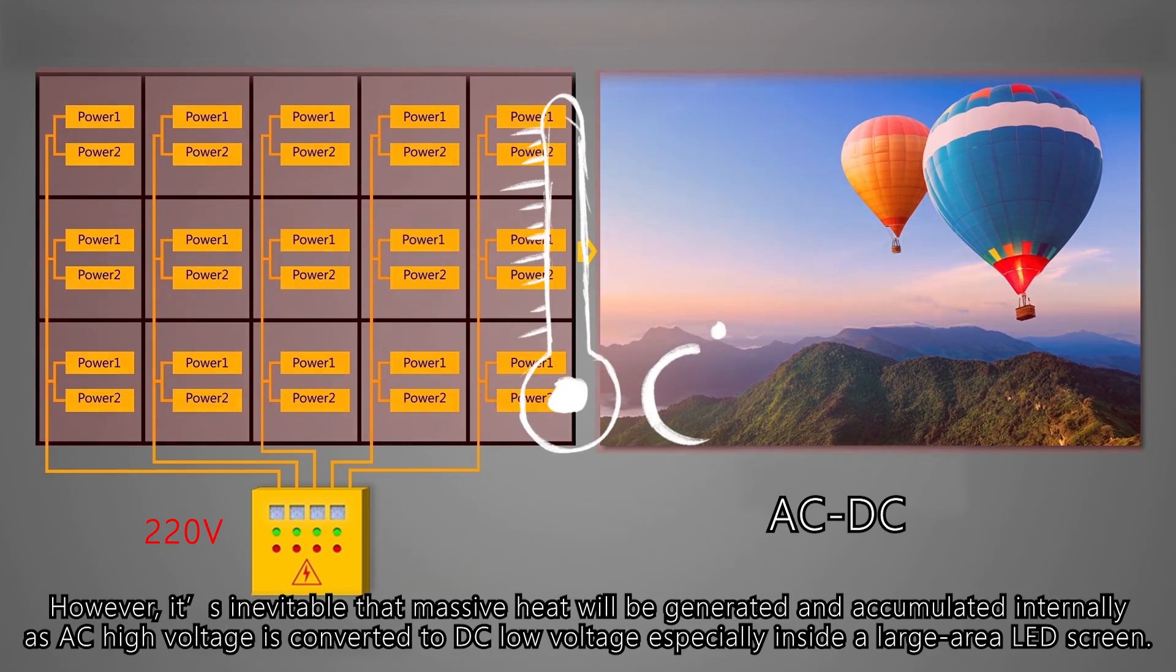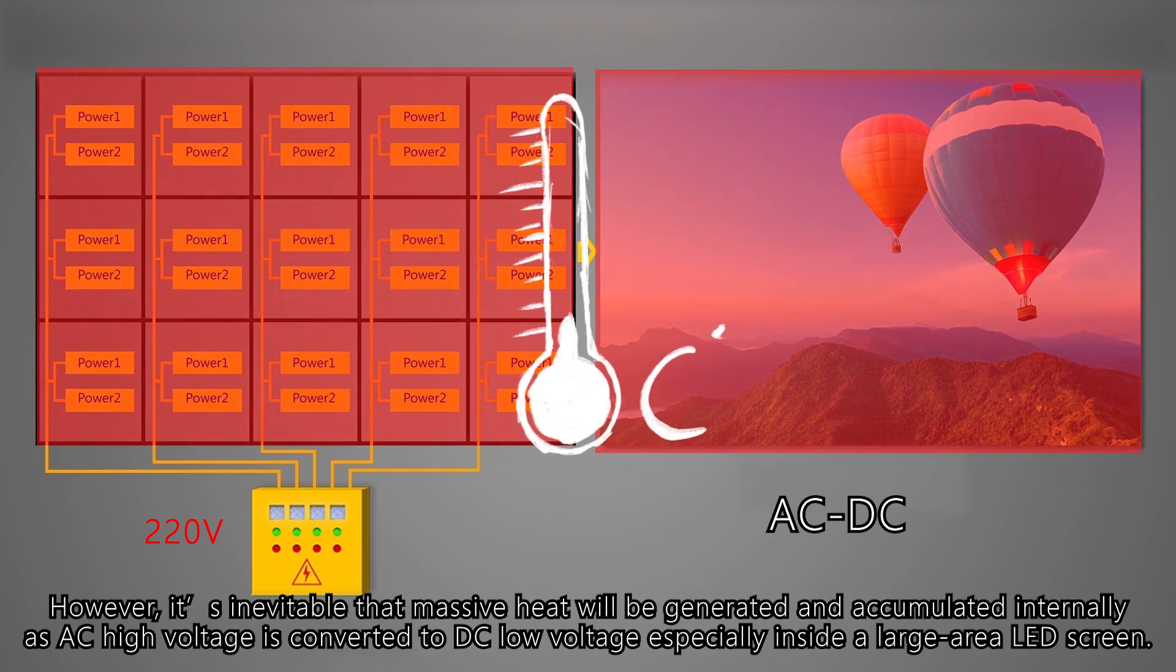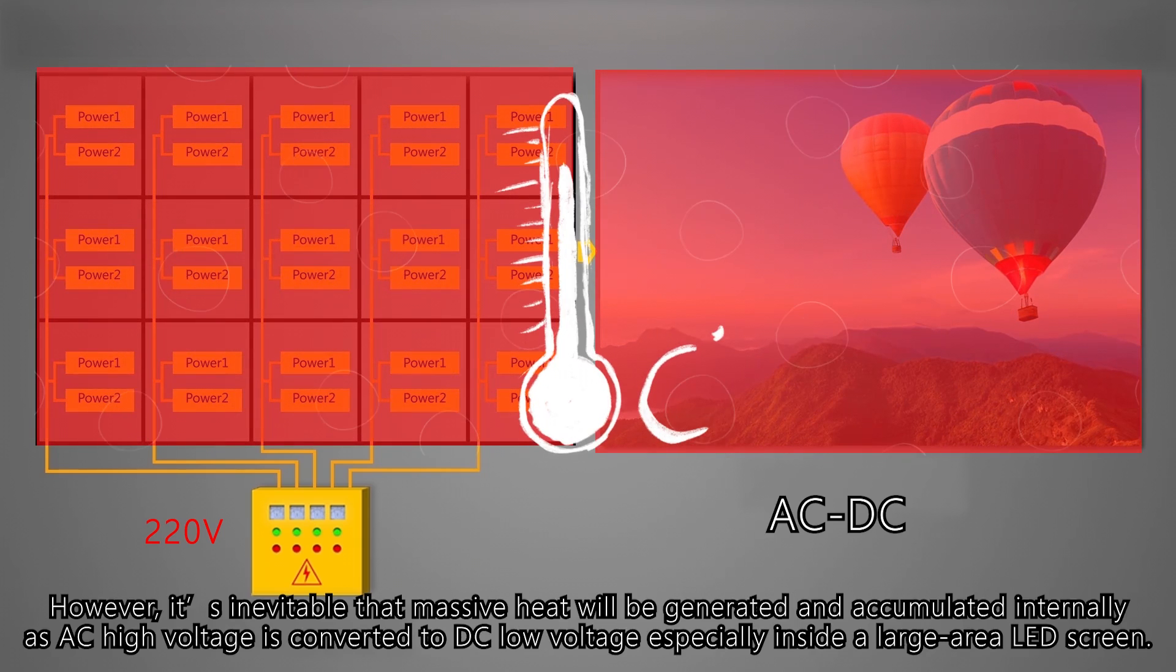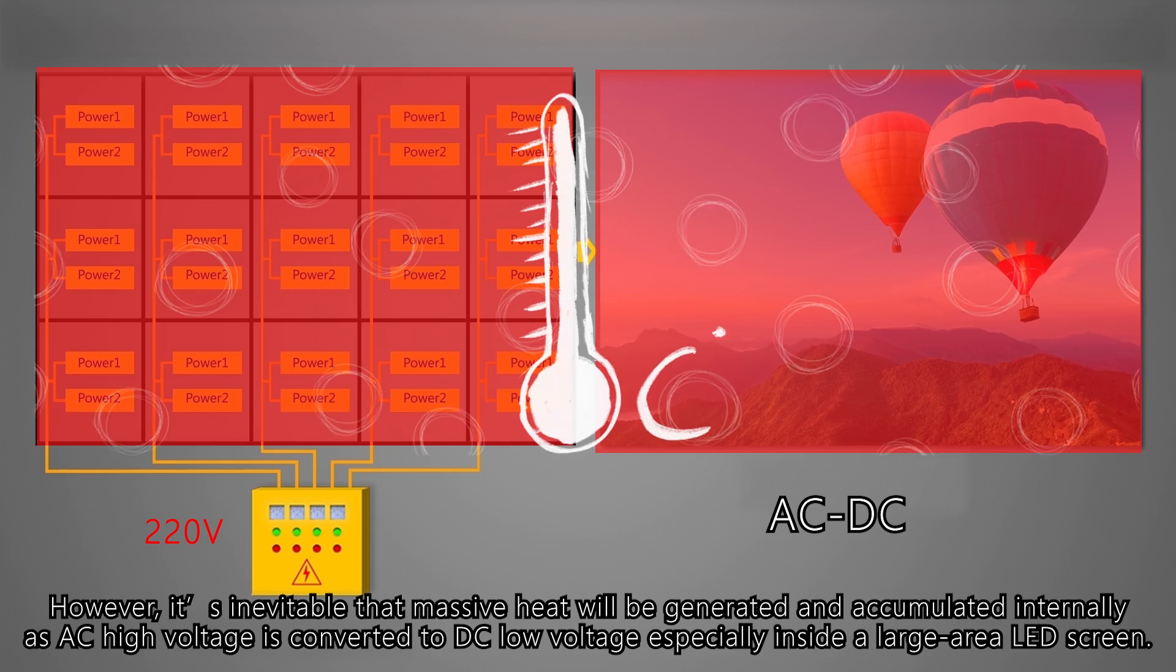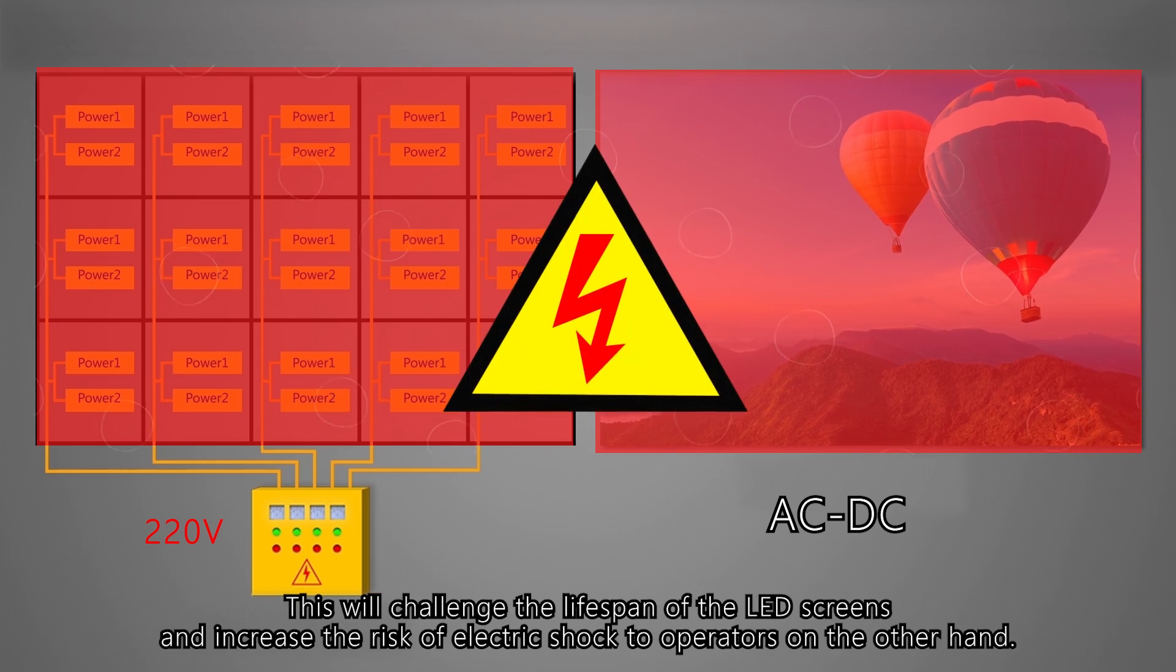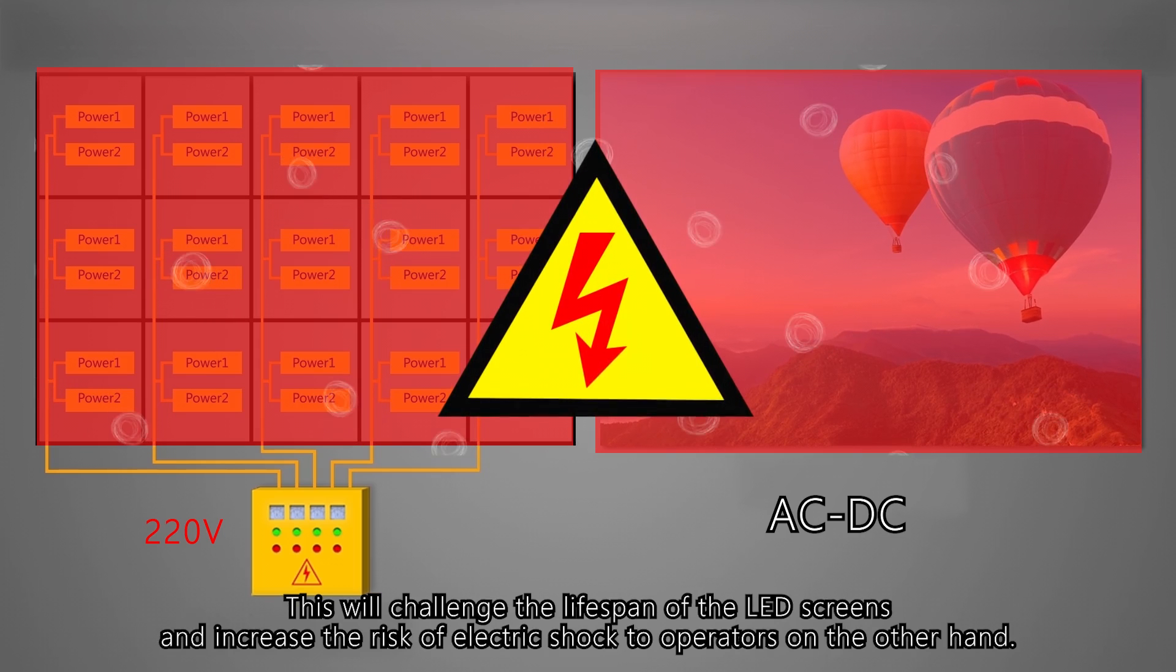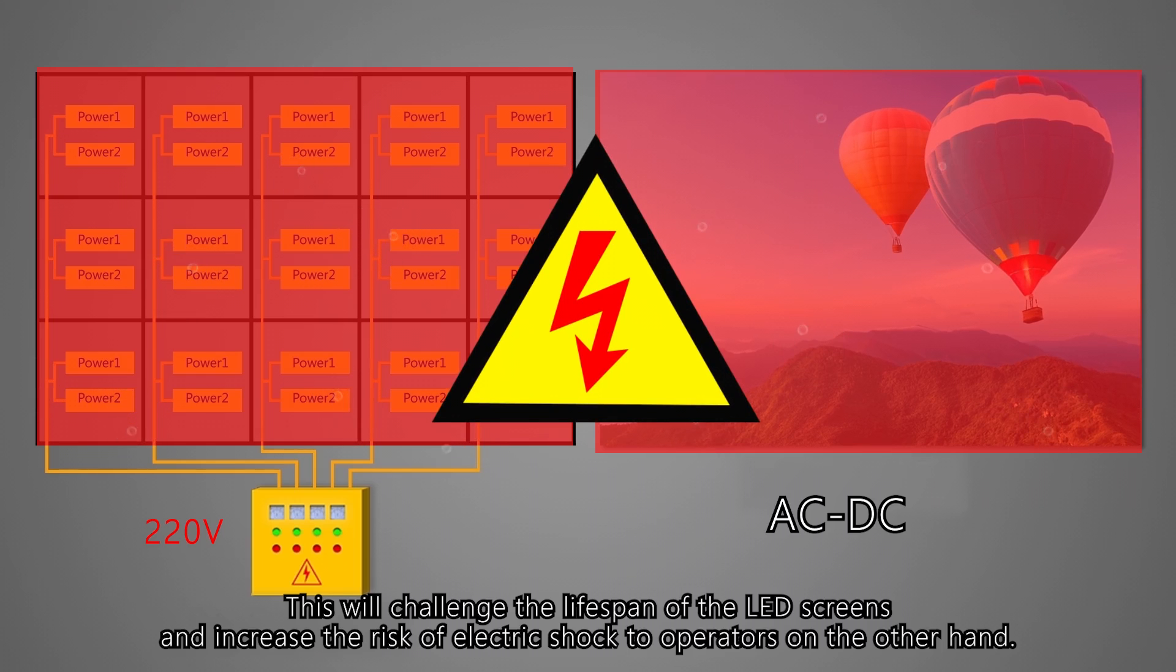However, it's inevitable that massive heat will be generated and accumulated internally as AC high voltage is converted to DC low voltage, especially inside large area LED screens. This will challenge the lifespan of the LED screens and increase the risk of electric shock to operators on the other hand.